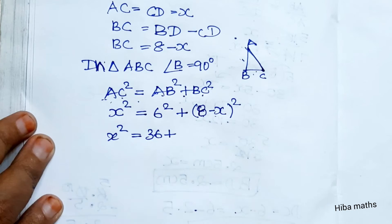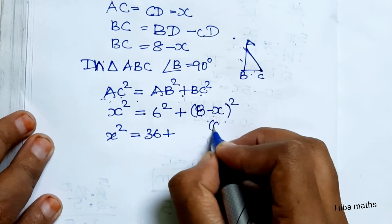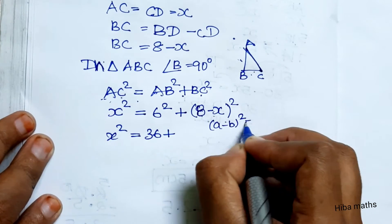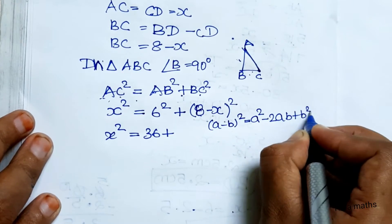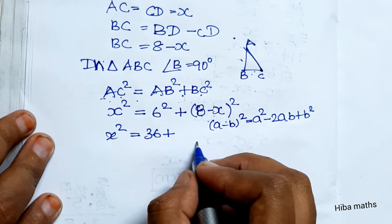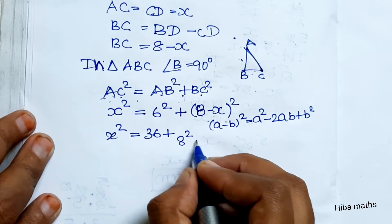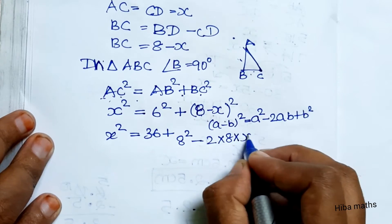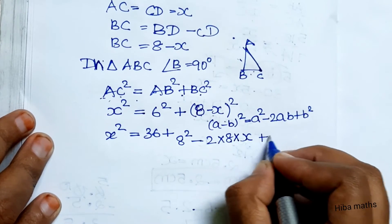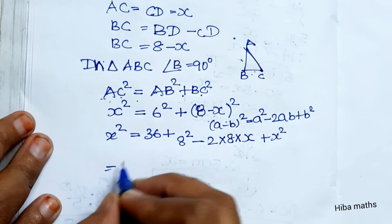x squared equals 36 plus (8 minus x) squared. Using the formula (A minus B) squared equals A squared minus 2AB plus B squared: 8 squared minus 2 times 8 times x plus x squared.